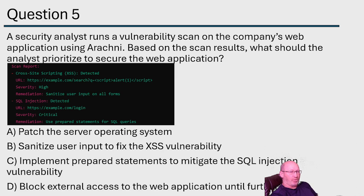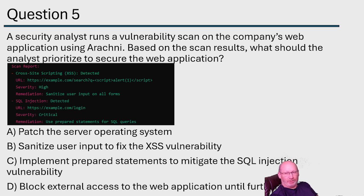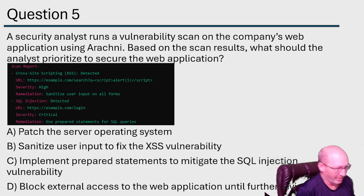Question number five: a security analyst runs a vulnerability scan on the company's web application using Arachni. Based on the scan results, what should the analyst prioritize to secure the web application? CySA+ has specific tools whose output you have to read through. One issue I have is that some of these tools, listed as free, aren't really free anymore — and you can't legally run a vulnerability scanner on AWS without permission.